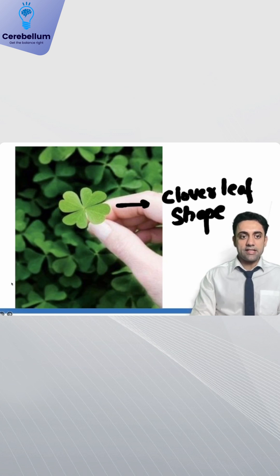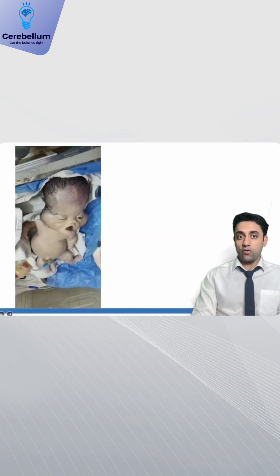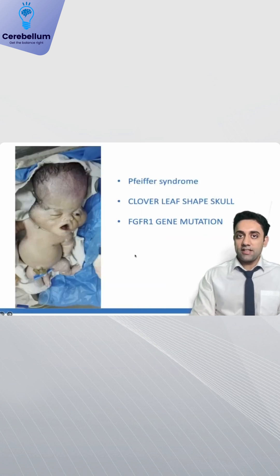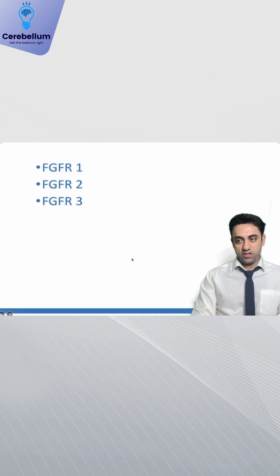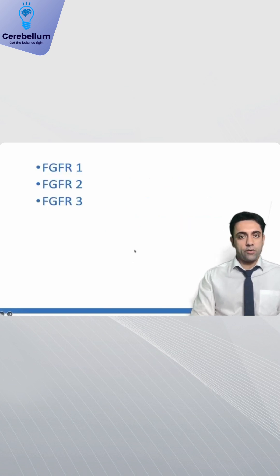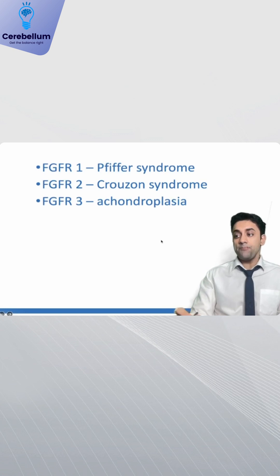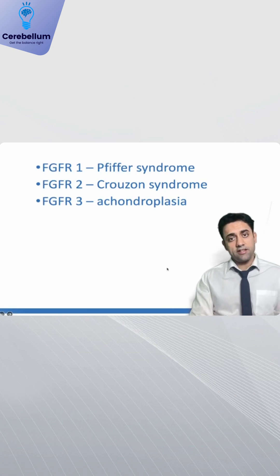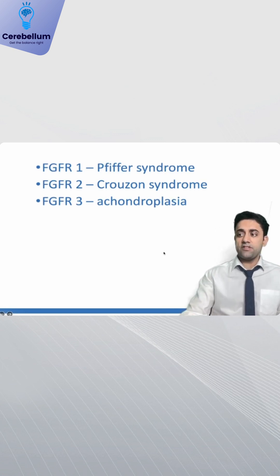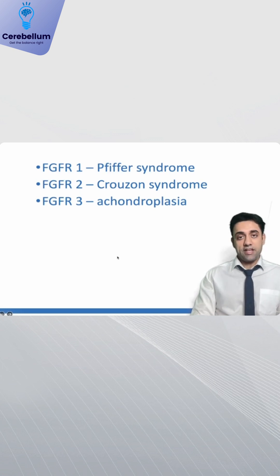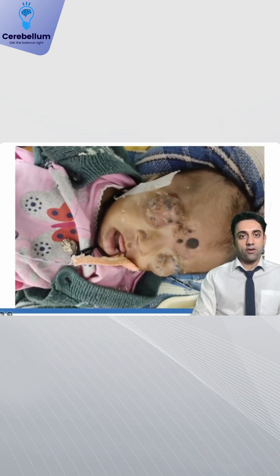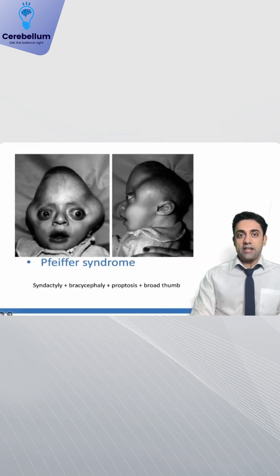A classical picture of the clover leaf shaped skull — this is the clover leaf shape skull, which is seen in Pfeiffer syndrome. It is an FGFR1 gene mutation. Another important point: FGFR1 gene mutation is seen in Pfeiffer syndrome, FGFR2 is seen in Crouzon syndrome, and FGFR3 gene mutation is seen in achondroplasia.